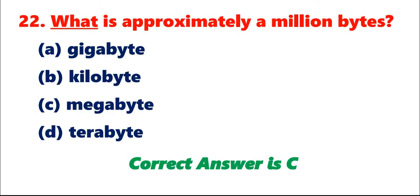Question 22: What is approximately 1 million bytes? A. Gigabyte. B. Kilobyte. C. Megabyte. D. Terabyte. Correct answer is C.